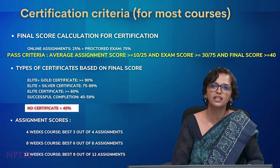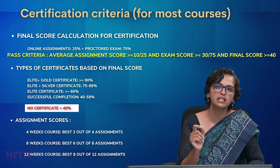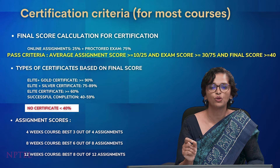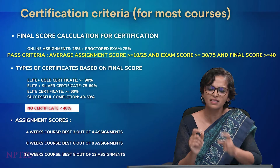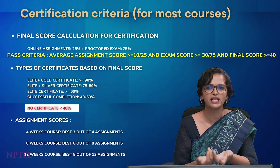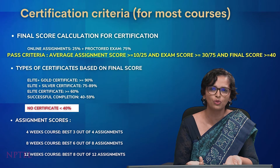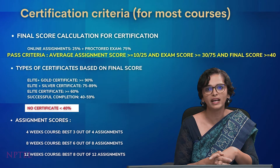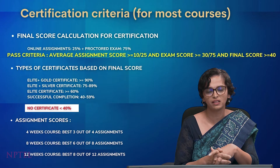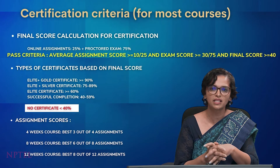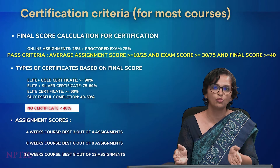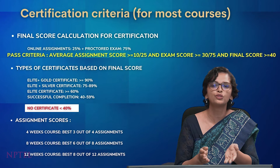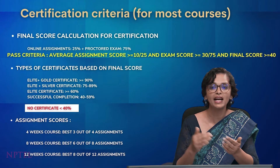The final score is calculated with 25% weightage for weekly assignments and 75% weightage for the final exam written at the center. A few courses may vary this pattern slightly based on the nature of the course, but broadly this is followed across all NPTEL courses. To pass and get a certificate, your average assignment score should be more than 10 out of 25 and your exam score should be more than 30 out of 75.